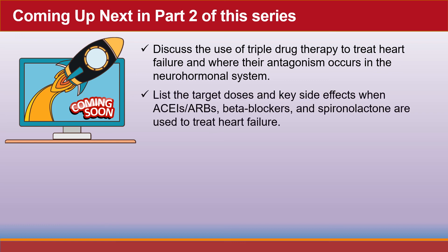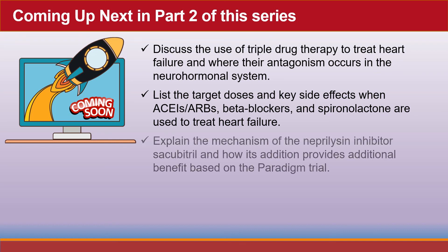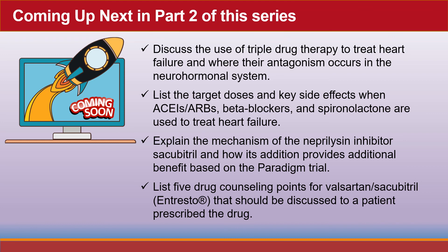We'll list the target doses and key side effects when ACE inhibitors and ARBs, beta blockers, and spironolactone are used to treat heart failure. We'll explain the mechanism of the neprilysin inhibitor Sacubitril and how its addition provides additional benefit based on the PARADIGM trial. And we'll list five drug counseling points for valsartan/sacubitril, known as Entresto, that should be discussed with a patient prescribed the drug.